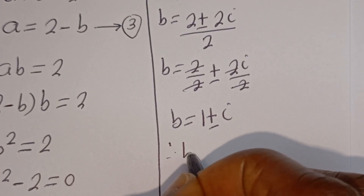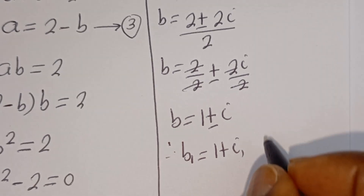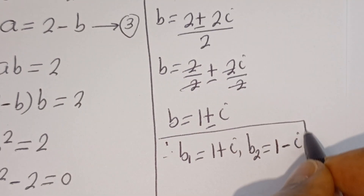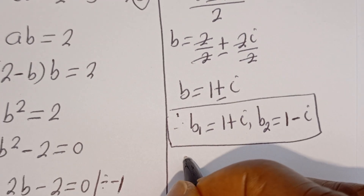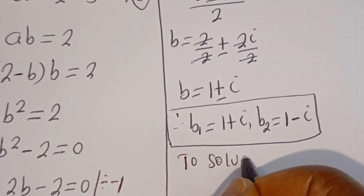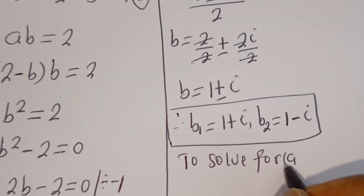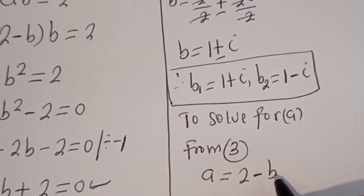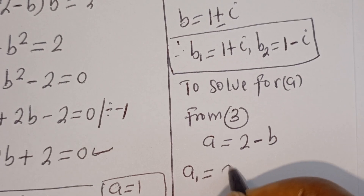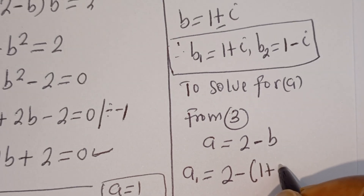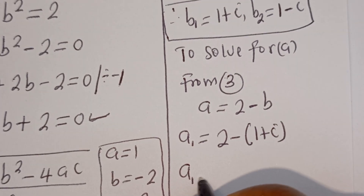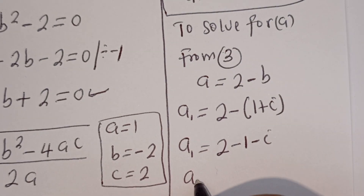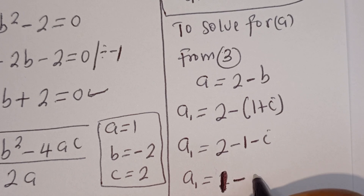Therefore B1 is equal to 1 plus i, and B2 is equal to 1 minus i. We've got the values of B1 and B2, so let's solve for A1 and A2. Then A1 is equal to 2 minus B1, which is 1 plus i, giving A1 equal to 1 minus i.